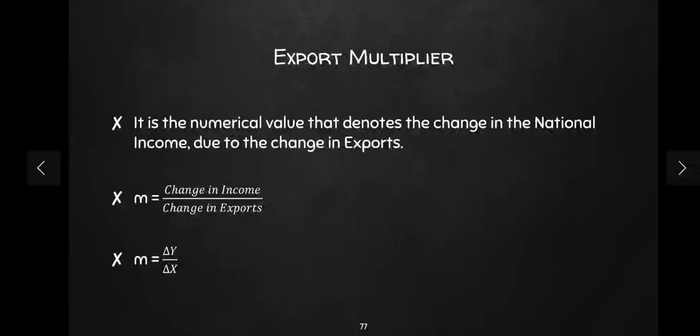So what does it say? The export multiplier is a numerical value which tells us what is the change in national income if the value of exports changes. If there is a change in exports, what is going to be the impact on national income? That is called the export multiplier.